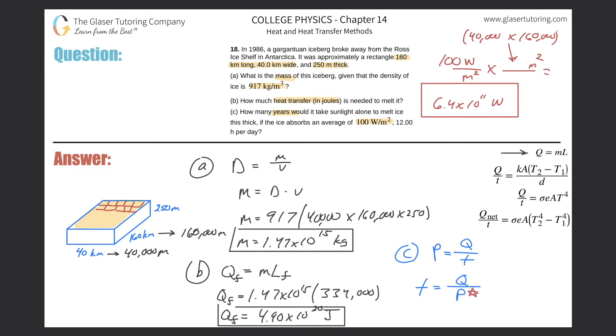So if I want to find the total wattage, doesn't it make sense that I have to take the watt per square meter and multiply it by the number of square meters I have there? So the square meter will be 40 by 160 kilometers. Convert that into meters. I did that already - 40,000 times 160,000. So it's going to be 100 multiplied by 40,000 multiplied by 160,000. This is 6.4 times 10 to the 11th Watts.